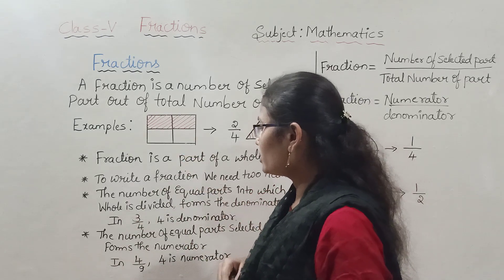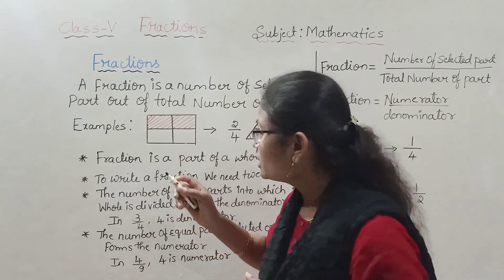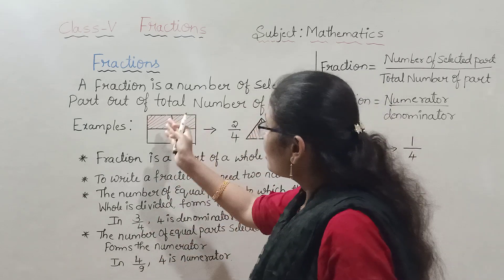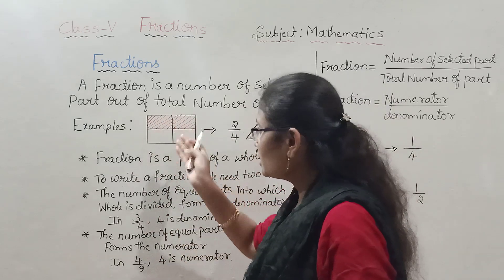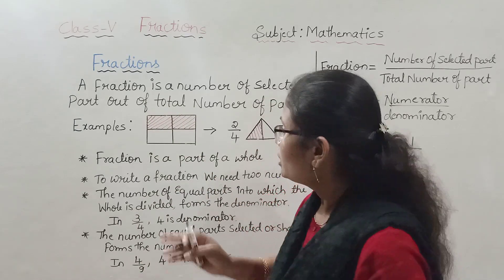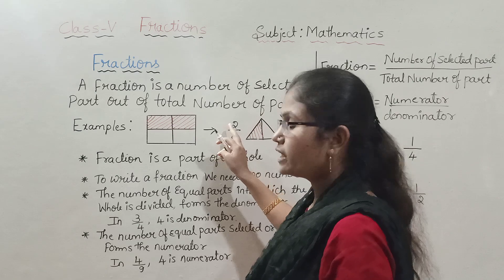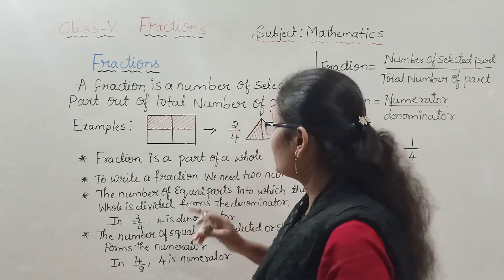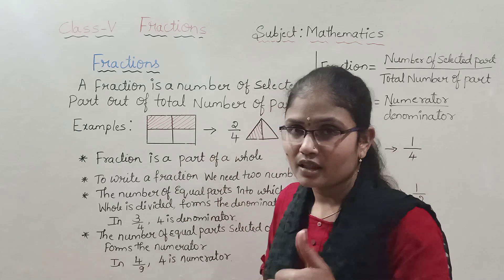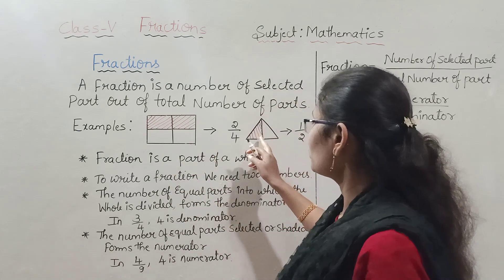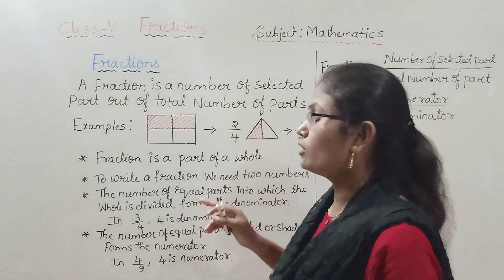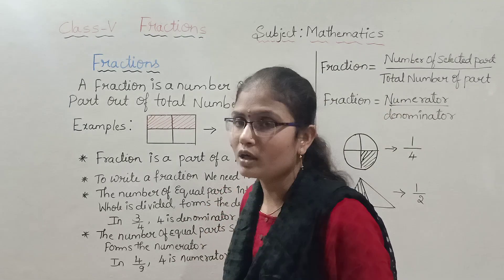For example, consider a rectangle divided into four equal parts, with two parts shaded. You represent this as two by four (2/4). Similarly, in the next figure, one part is shaded out of two parts, so you represent it as one by two (1/2).